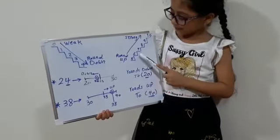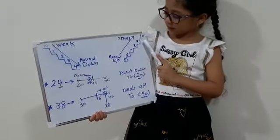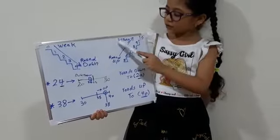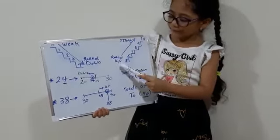5, 6, 7, 8, 9, 10 are strong, so they are rounded up.